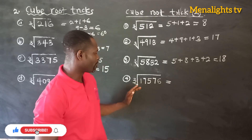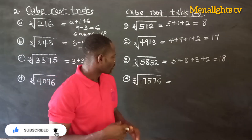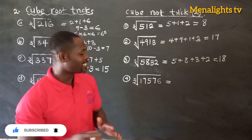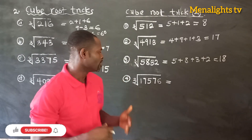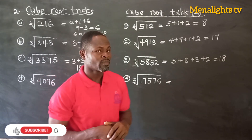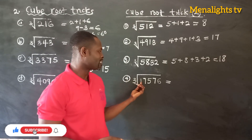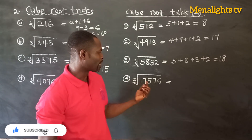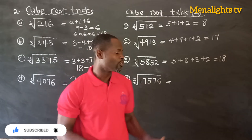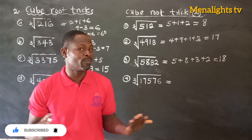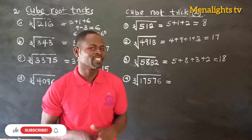Now for the fourth one: find the cube root of 17,576. You add 1 plus 7 plus 5 plus 7 plus 6, and solve this — leave the answer in the comment section for me.